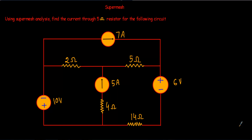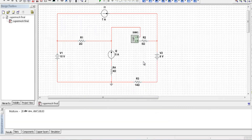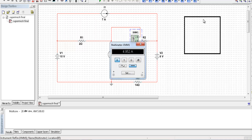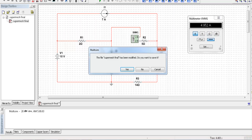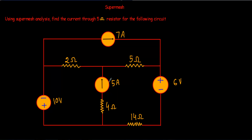In this video I will show you another example of super mesh analysis. Using super mesh analysis, find the current through the 5 ohm resistor for the following circuit. I have to calculate the current through this 5 ohm resistor using the concept of super mesh. Before going into the circuit solution, let me show you the current through this 5 ohm resistor using the MultiSim simulator. If I run this program, you will see the current through this 5 ohm resistor will be equal to 4.952 ampere.